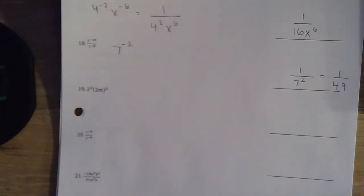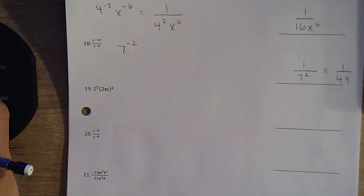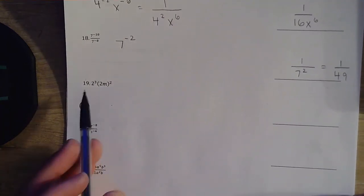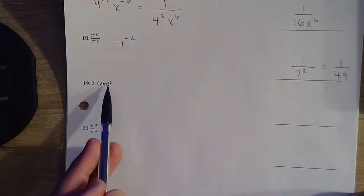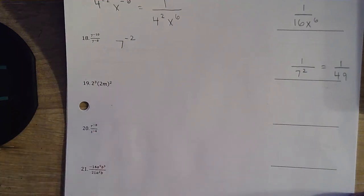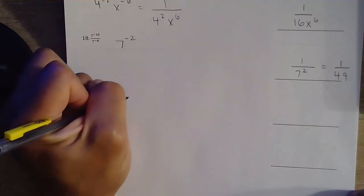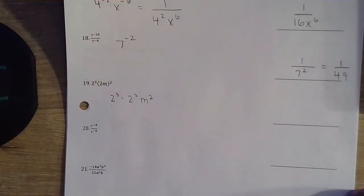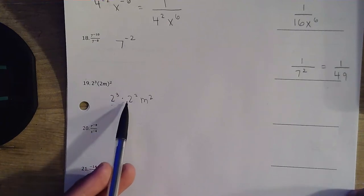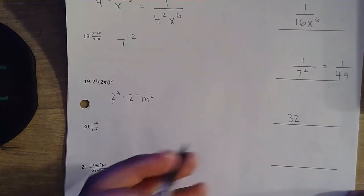Question number 19. We get rid of our parentheses first — distribute the 2 to each of these. We have 2 cubed, then multiplied by 2 squared, m squared. 2 cubed is 8, 2 squared is 4, so 8 times 4 is 32. And then we still need that m squared. Final answer: 32m squared.